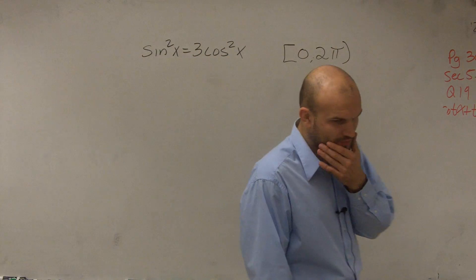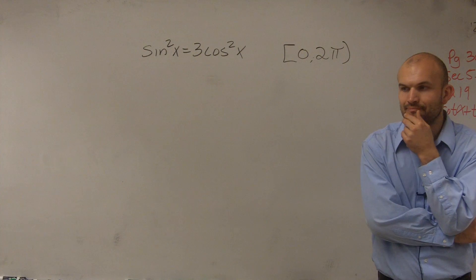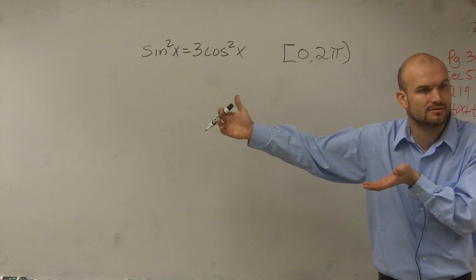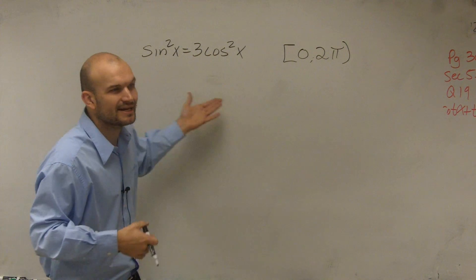So to do a problem like this, we're looking at it and saying, alright, so far we've always had one trig function, and we just applied our inverse operations to solve for it, right? And that was kind of pretty basic what to do. But now we have a sine and a cosine.